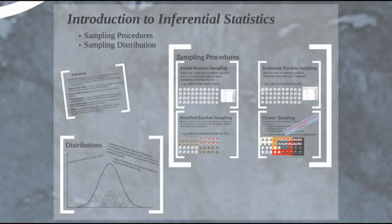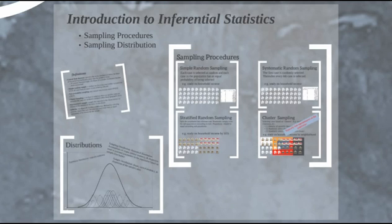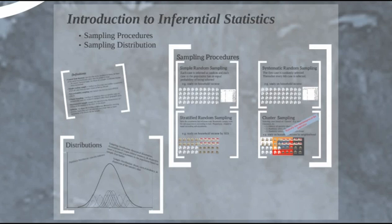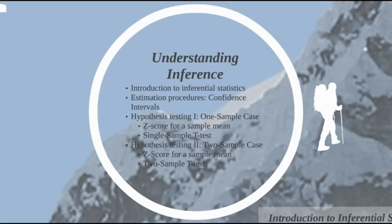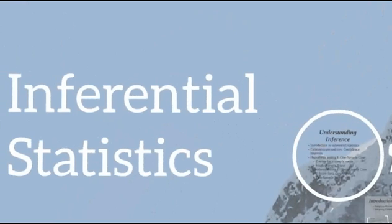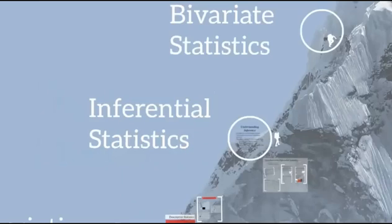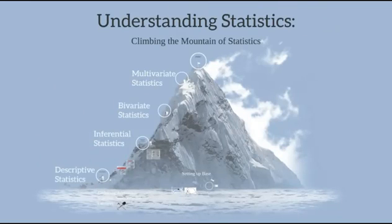This is your introduction to inferential statistics — we'll be building on this. Think about your sampling procedures and distributions, especially when reading scientific literature or watching the news. This is one way researchers and news sources can skew data to fit their narrative — if you're using a biased sample, your data and distributions will be biased. Next time we'll be going over estimation procedures and confidence intervals, and we will keep going on inferential statistics. That is your daily dose of statistics.